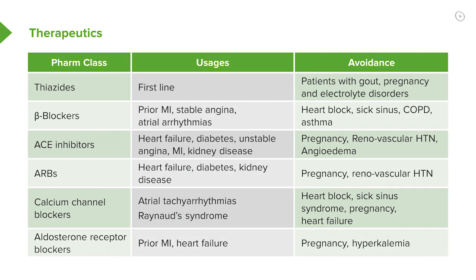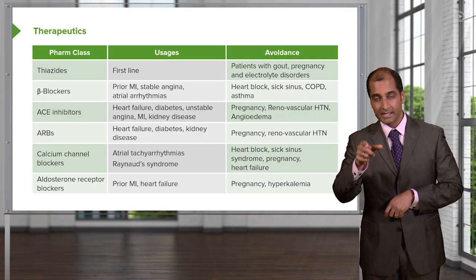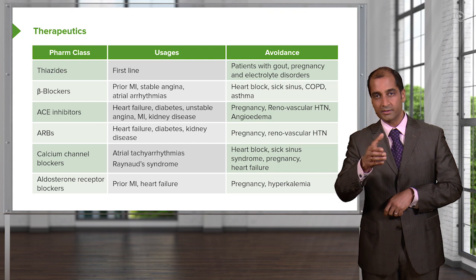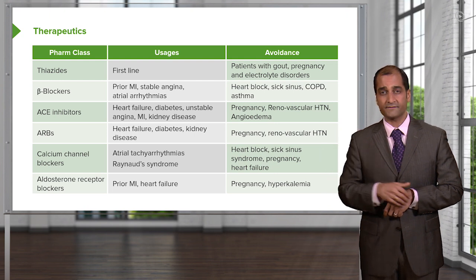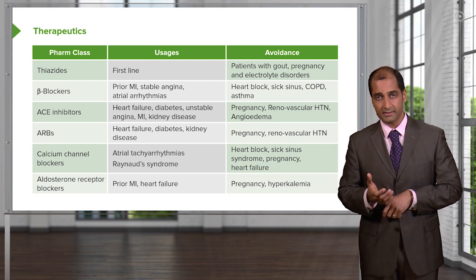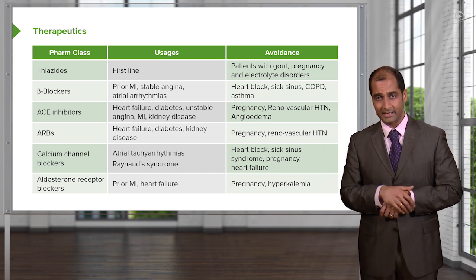Aldosterone receptor blockers: prior MI and heart failure are indications. Pregnancy and hyperkalemia — definitely avoid. Remember, aldosterone normally functions to get rid of potassium. If your patient already has hyperkalemia, maybe secondary to renal failure, and you give an aldosterone blocker, you exacerbate the hyperkalemia. That affects the heart — the number one organ you're worried about — and you may see T-wave tenting on EKG.